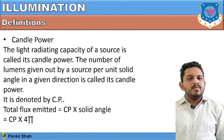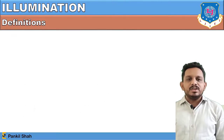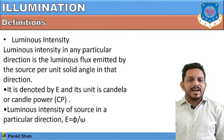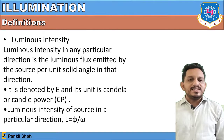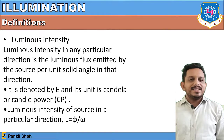The solid angle for a full sphere is given by 4π. Now, luminous intensity in any particular direction is the luminous flux emitted by the source per unit solid angle in that direction. It is denoted by E, and its unit is candela — equivalent to candle power. Luminous intensity is given by the formula E = φ / A.